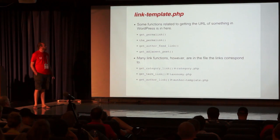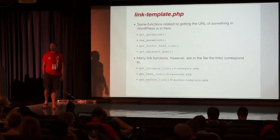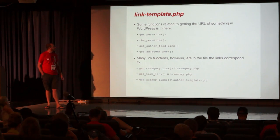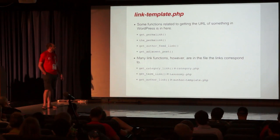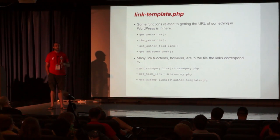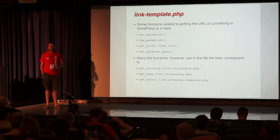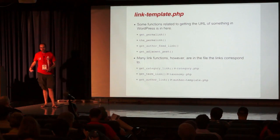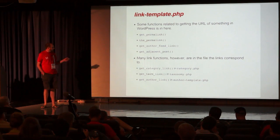link-template gives you some of the functions that WordPress uses to generate links. get_permalink and the_permalink are both ones you've probably encountered. If the link function is really specific to one of the APIs in WordPress — so categories, terms, authors, and so on — it's in one of the files that corresponds to that functionality. So rather than having every link function in one place, it's broken out a bit.